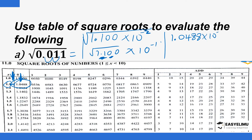So we have 1.0488 times 10 to the power negative 1. You can leave the answer in that form, or convert it to an ordinary number. Since the power is negative 1, move the decimal point one step to the left, giving 0.10488 as the square root of the original number.